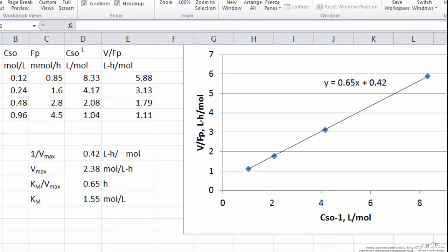This is an Excel spreadsheet where we have implemented our fit. I've just replicated the same data here that was given in the problem statement. We want to plot on the x-axis our reciprocal concentration of substrate. We want to plot on the y-axis the volume divided by the flow rate of product. They involve a unit conversion from millimoles to moles. Those data are plotted here on these four data points, and we see that it forms a nice straight line relation so that we expect that the Michaelis-Menten model is a good model in this case, with a slope of 0.65 and an intercept of 0.42.